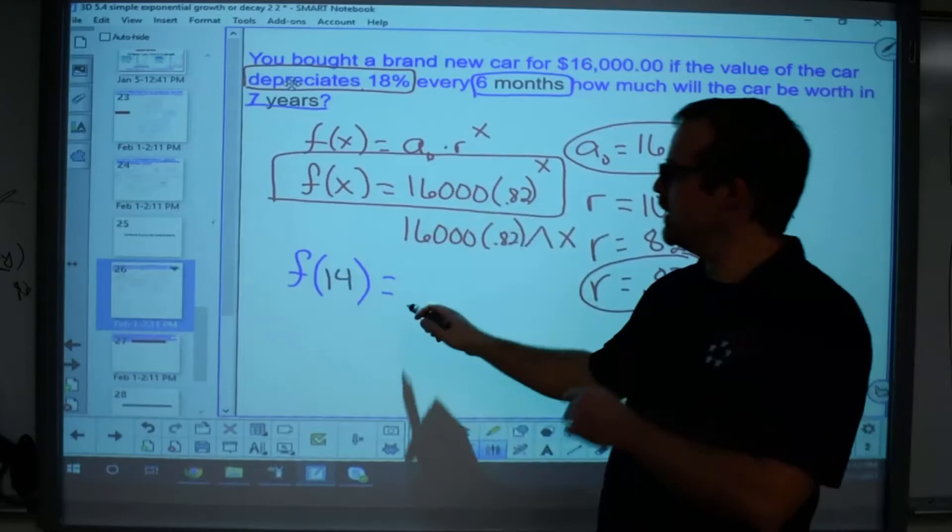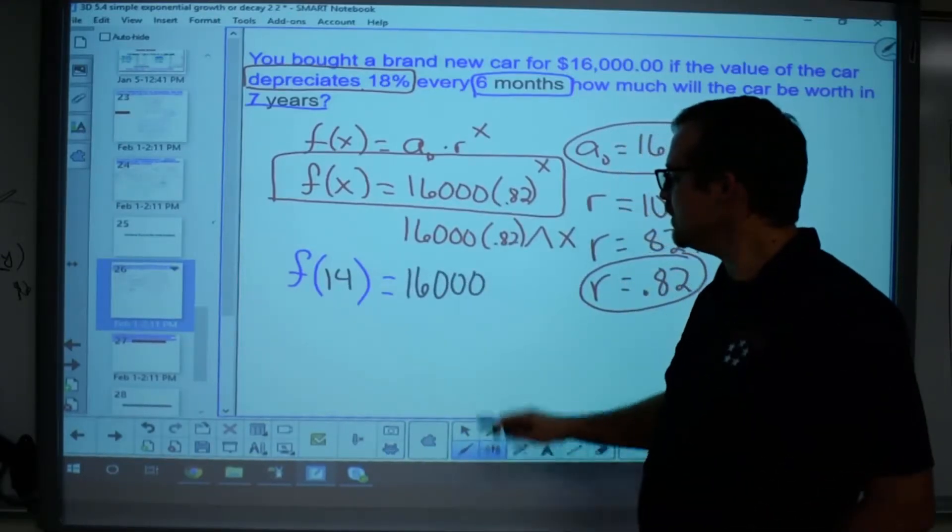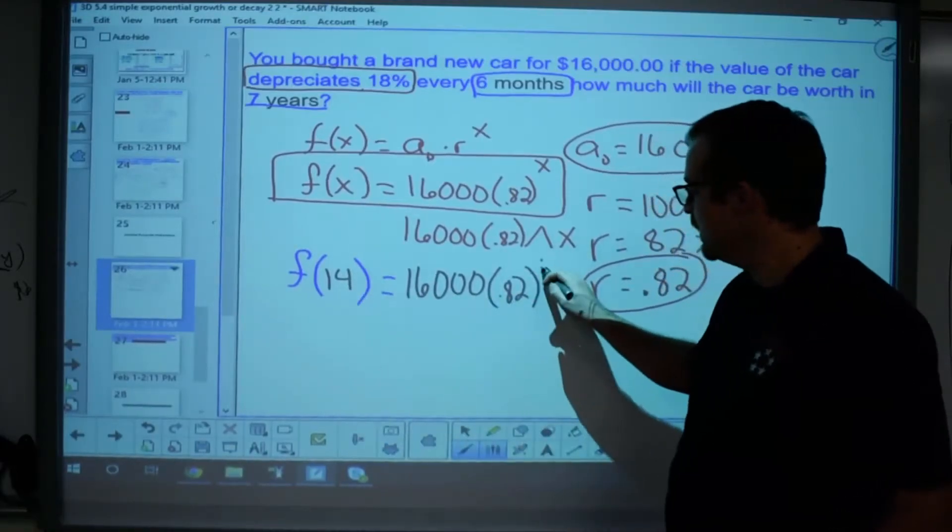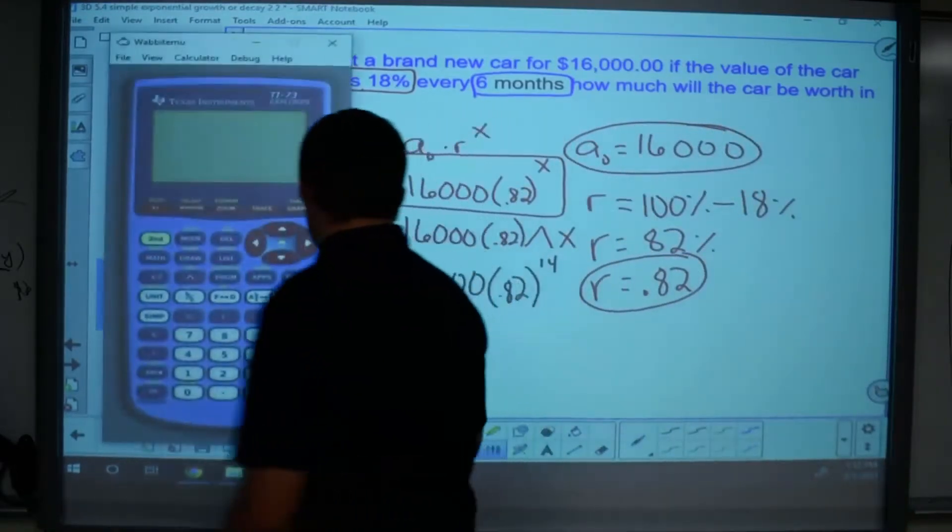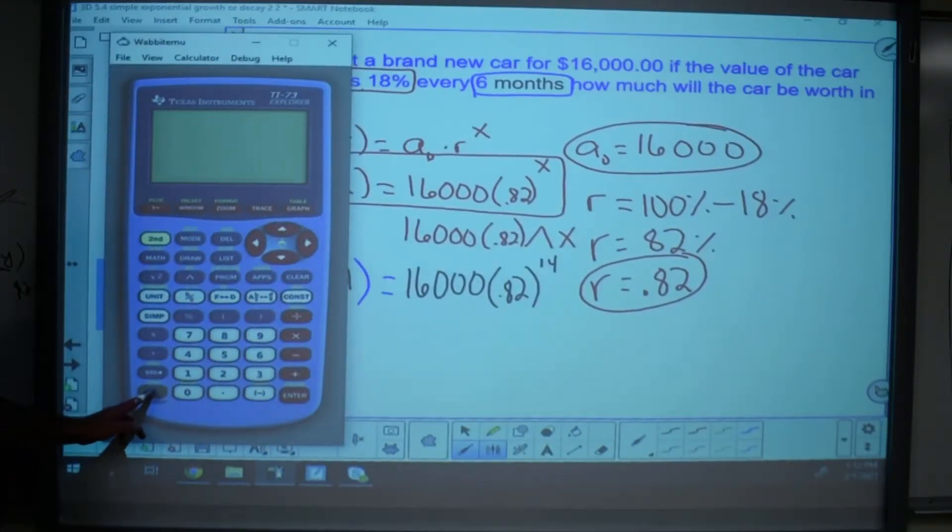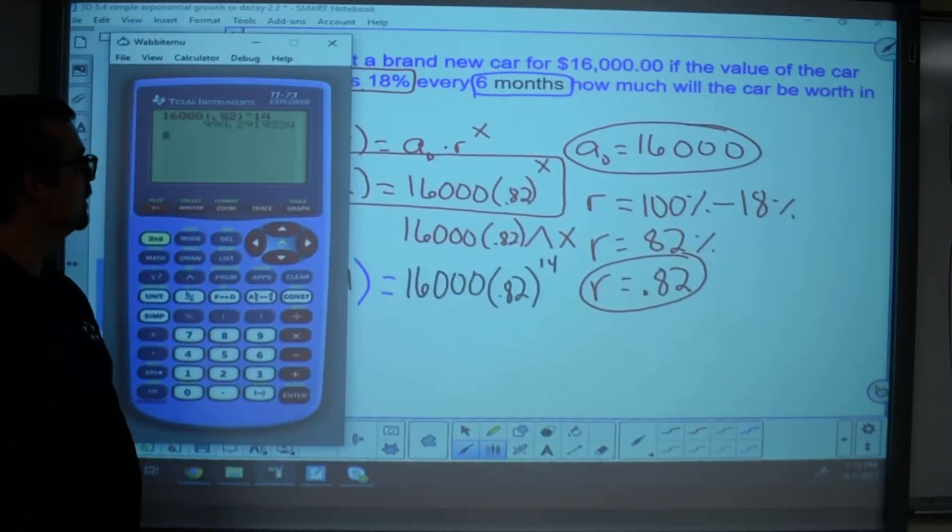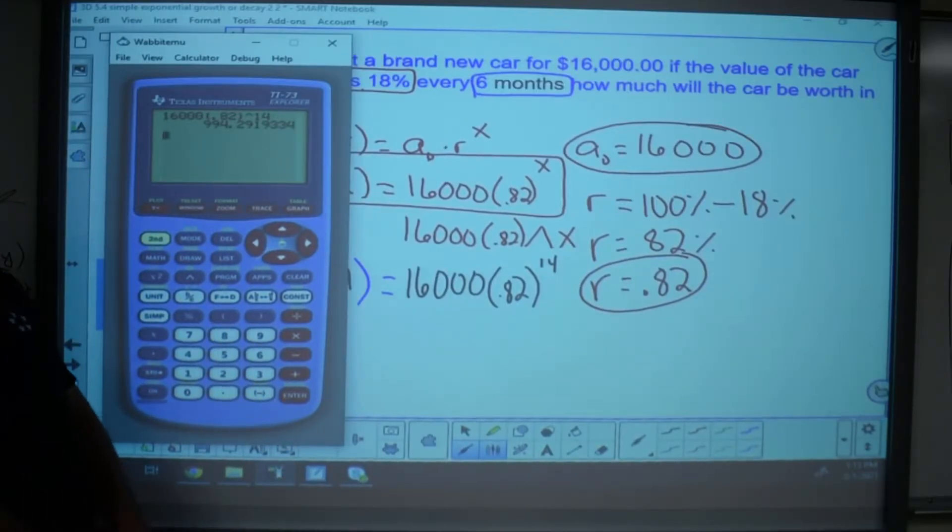All right. So we're plugging 14 into my equation. So 16,000, let's see here, my ratio is still 0.82, but this time we're going to go to the power of 14 and substitute that into my calculator. It helps if it turns on first though, right? There we go. So 16,000, parentheses 0.82, so times 0.82, which is my ratio to the power of, that's the shift six, or in this case the carat key, 14. How much is my car worth? $994.29.